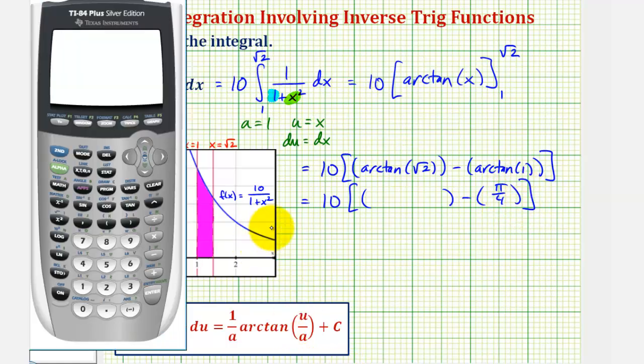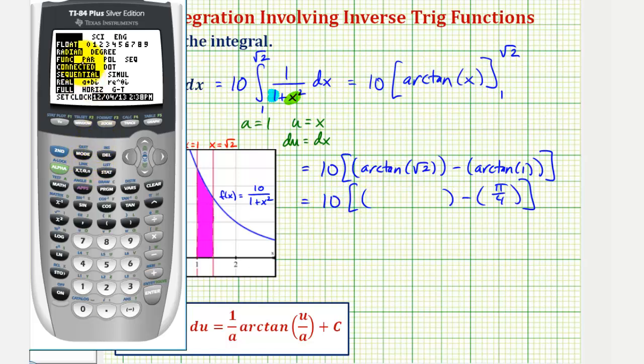Now we'll go to the calculator. The first thing we should do is make sure we are in radian mode. So we'll press the mode key. Notice radian is highlighted, so we'll go back to the home screen. And then for arctangent, or inverse tangent, we'll press second tangent, and then square root two, enter. So the approximate value would be point nine five five three two.